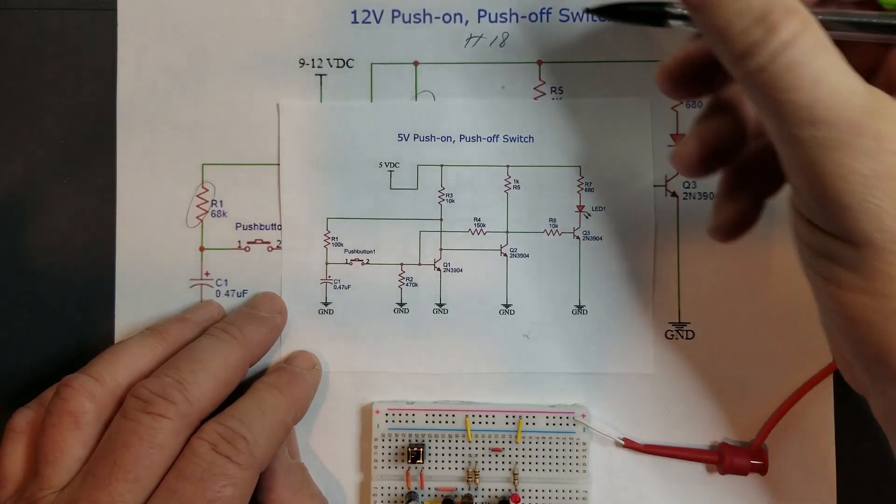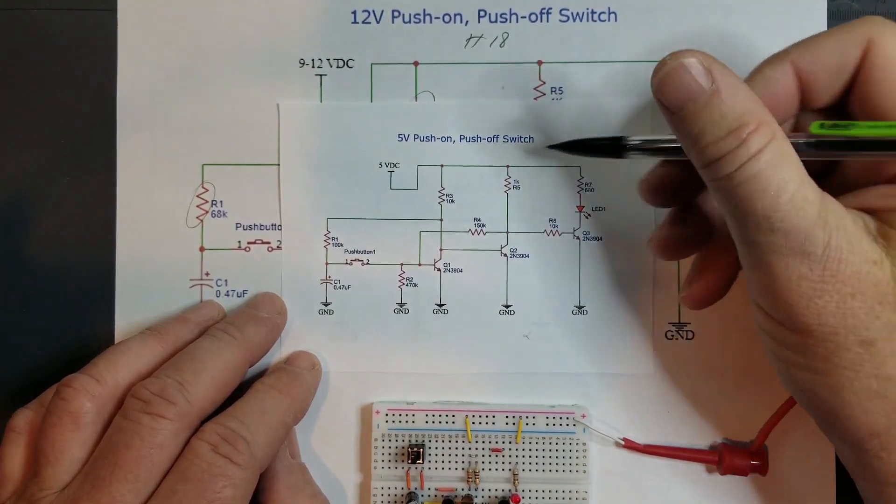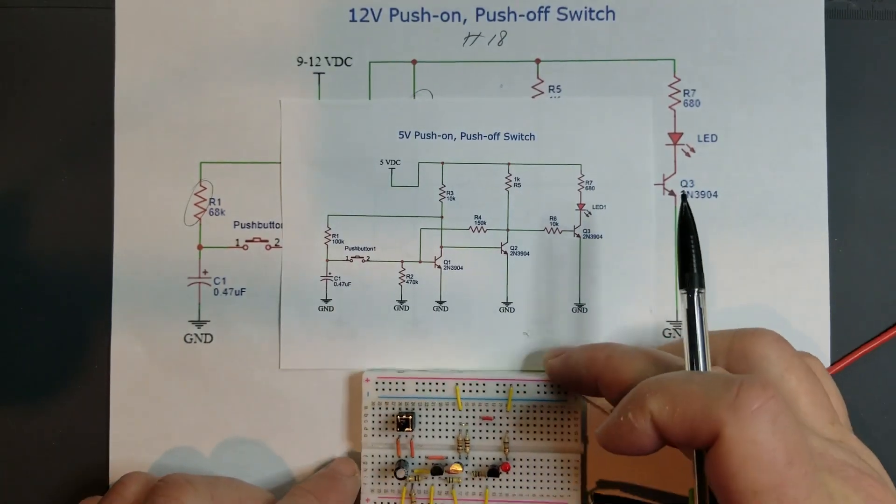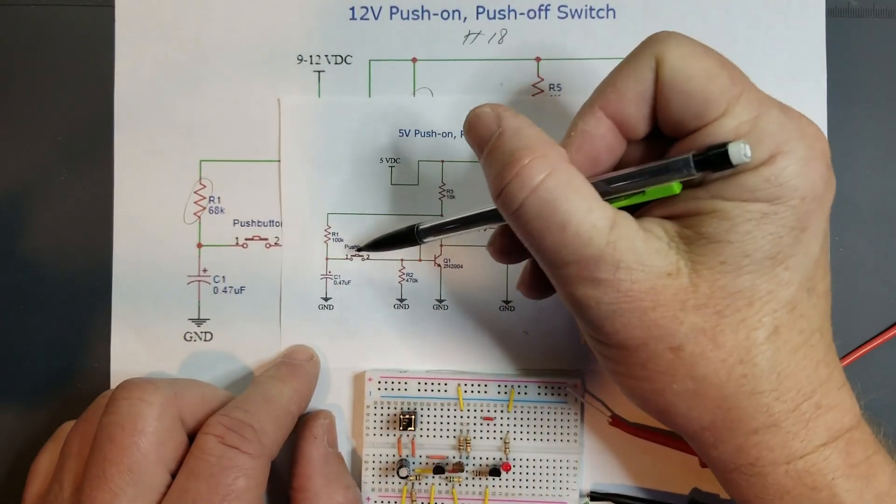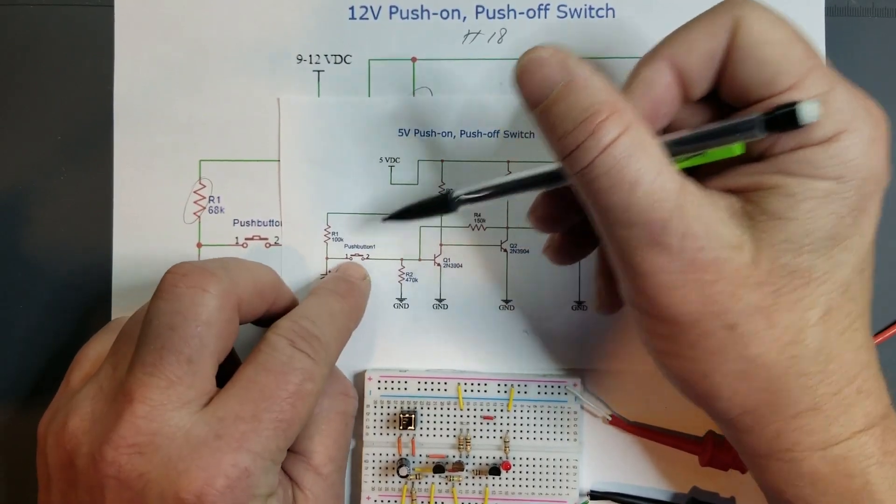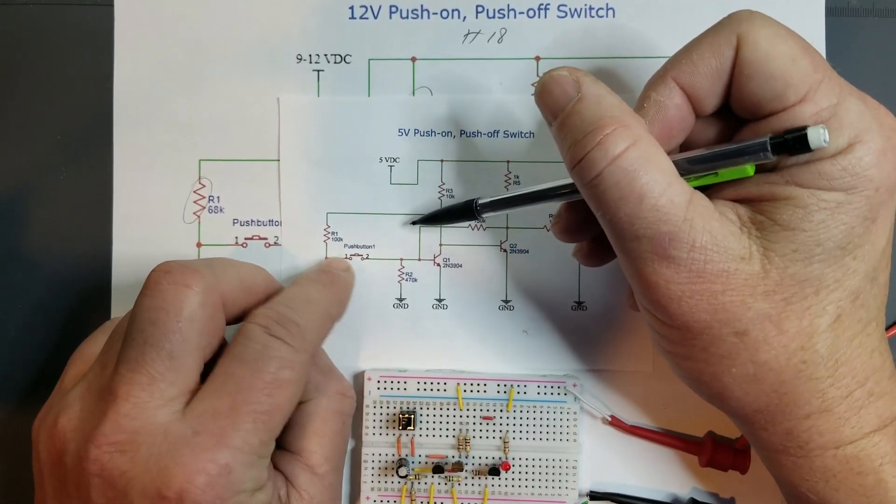So I went through the circuit and decided on which components to change so that it was operationally equivalent to the 12 volt circuit and made it a 5 volt version. I also made some improvements here.